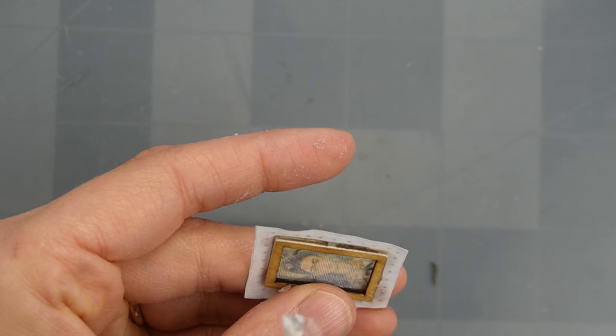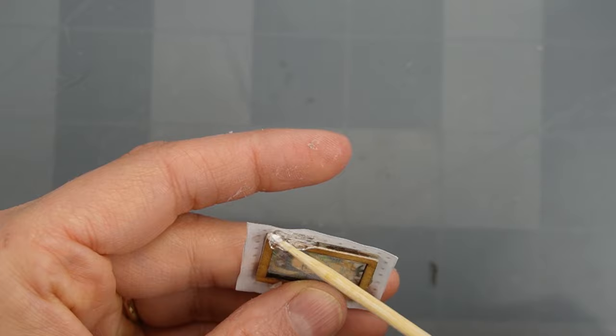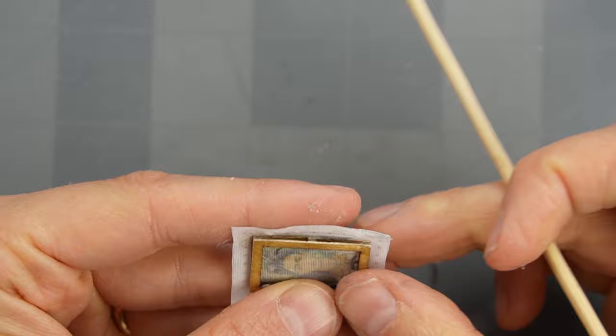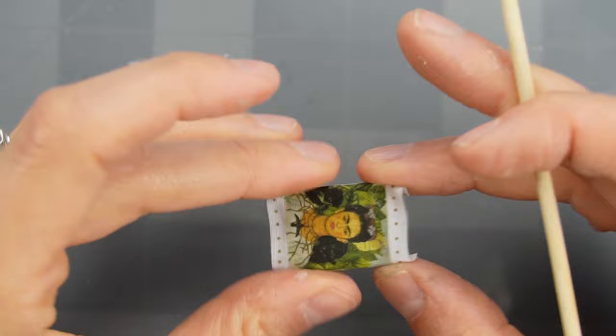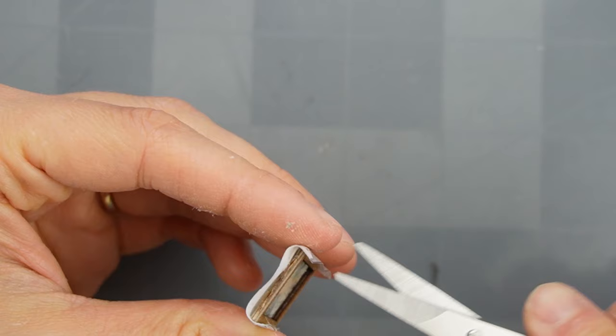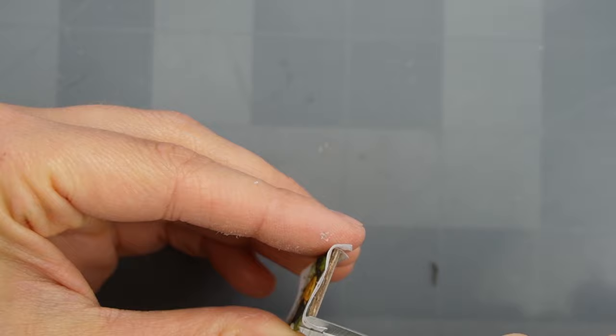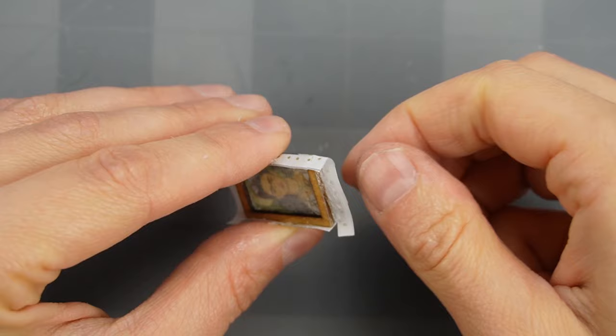After attaching the front, I add some extra on the edges and fold the two longest sides. Then I cut a small slit on each side and fold over the top and bottom of the canvas.